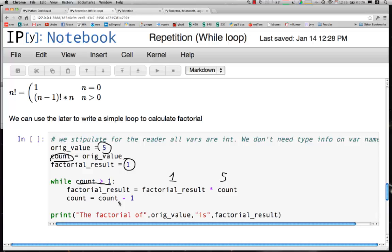And then count goes down by 1 and we go around. Now the factorial value is equal to 5 times the new count which is 4 and count goes down by 1. Now our factorial is 20 times 3 and count goes down by 1.